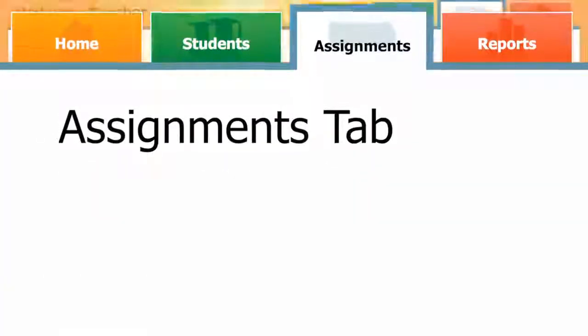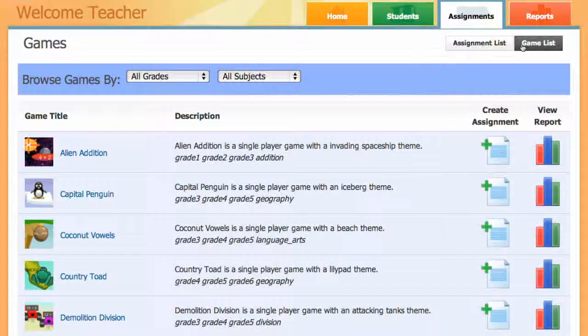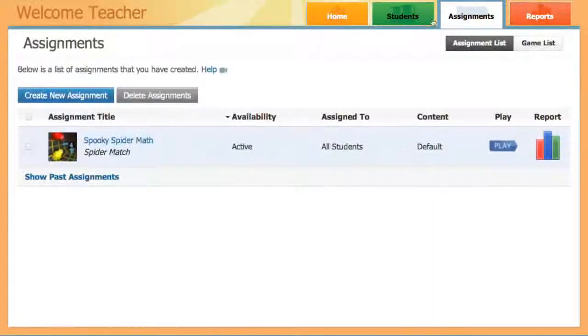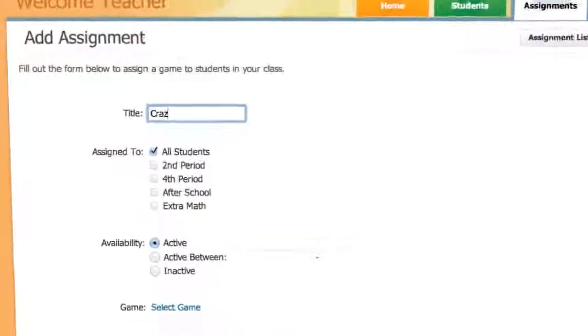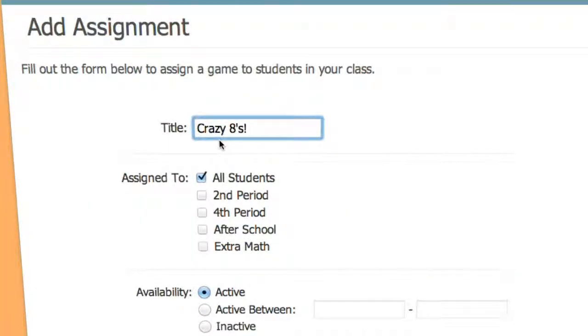In the assignments section, teachers can customize game content to match their lesson plans. To create a game assignment, click the create new assignment button. First, enter the assignment name and then click the student group that you want to assign it to. Remember, you can create groups in the student section.